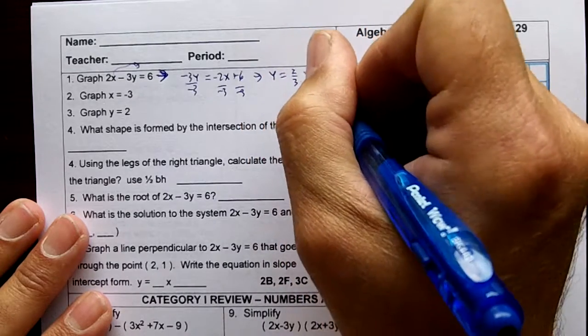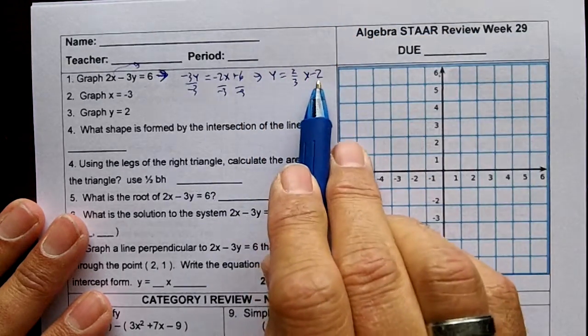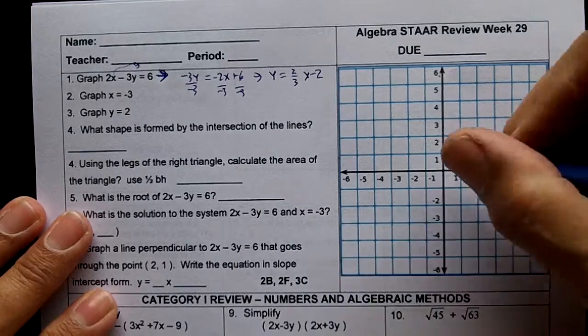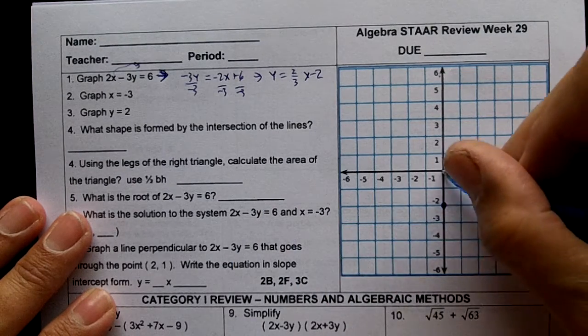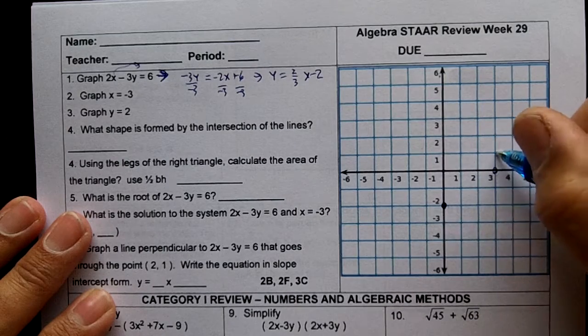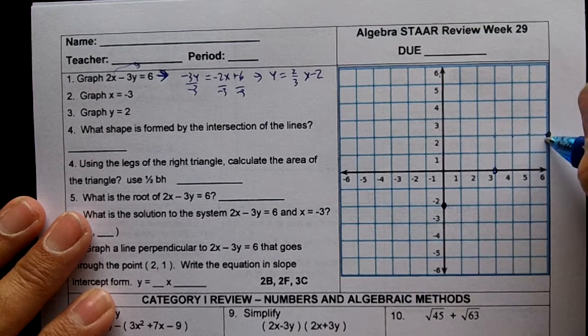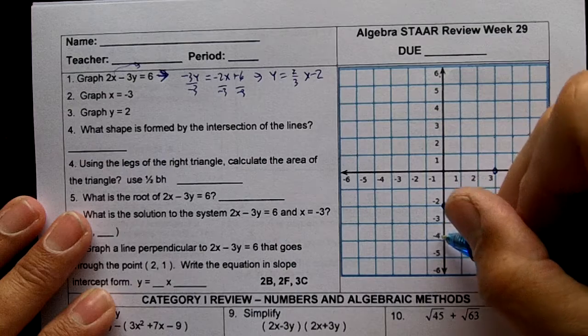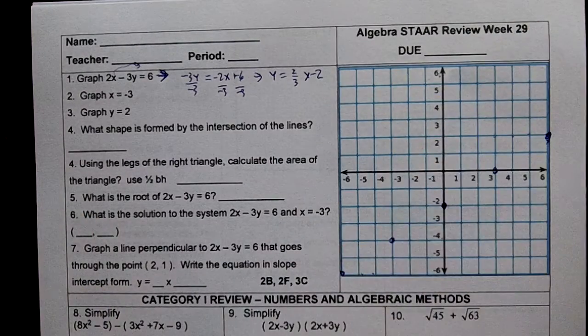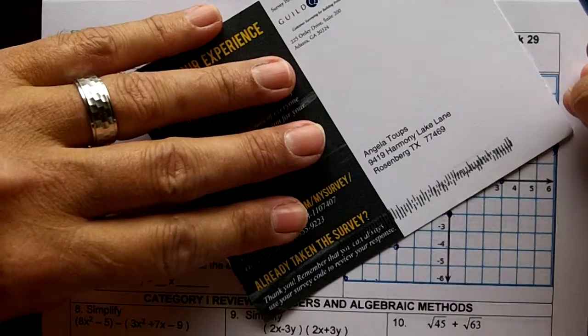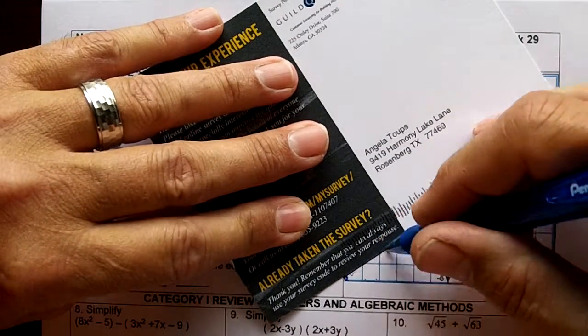So we know our y-intercept and we know our slope. We'll go down here to the negative 2 and then we'll go up 2 over 3, up 2 over 3, and then we'll go backwards down 2 over 3, down 2 over 3. Connect the dots using any type of straight edge you have.